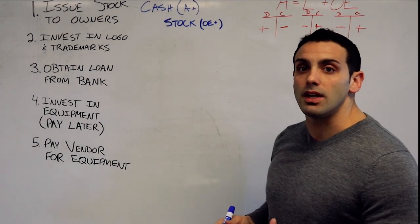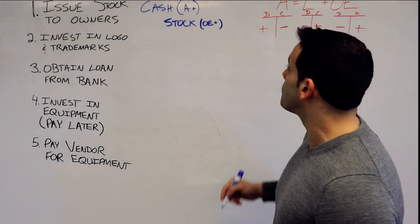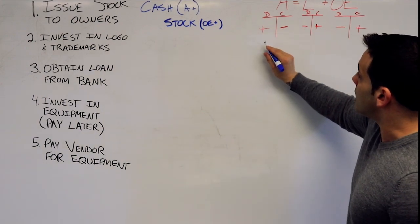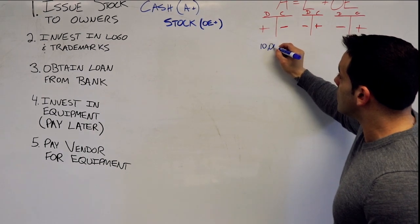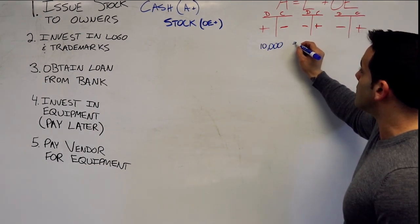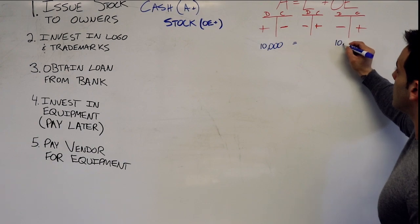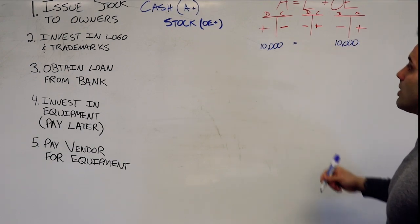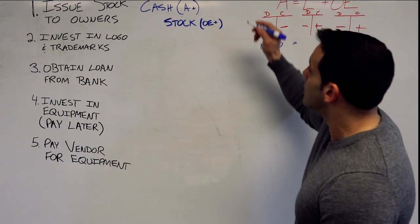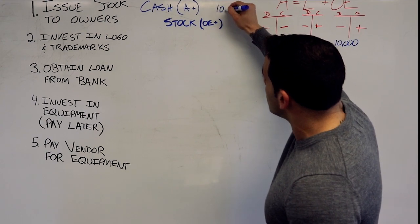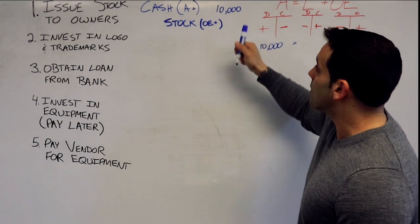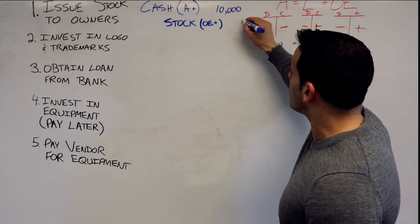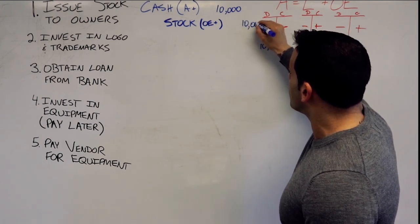So we have an increase of an asset for $10,000. Now, does that equal an increase in equity for $10,000? Yes, it does. So we're good. So we have our journal entry here. We're debiting cash for $10,000, and we're crediting stock for $10,000.